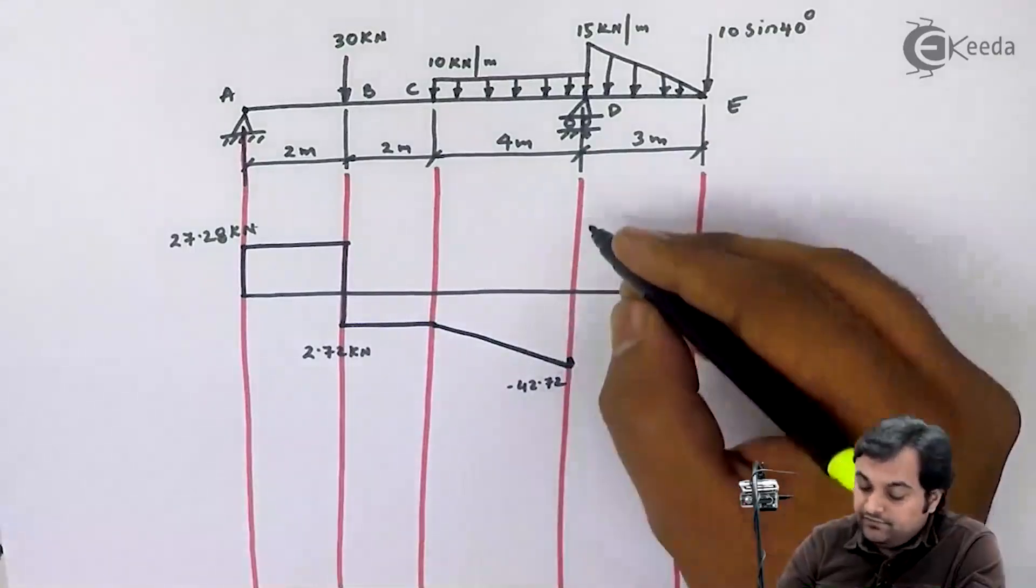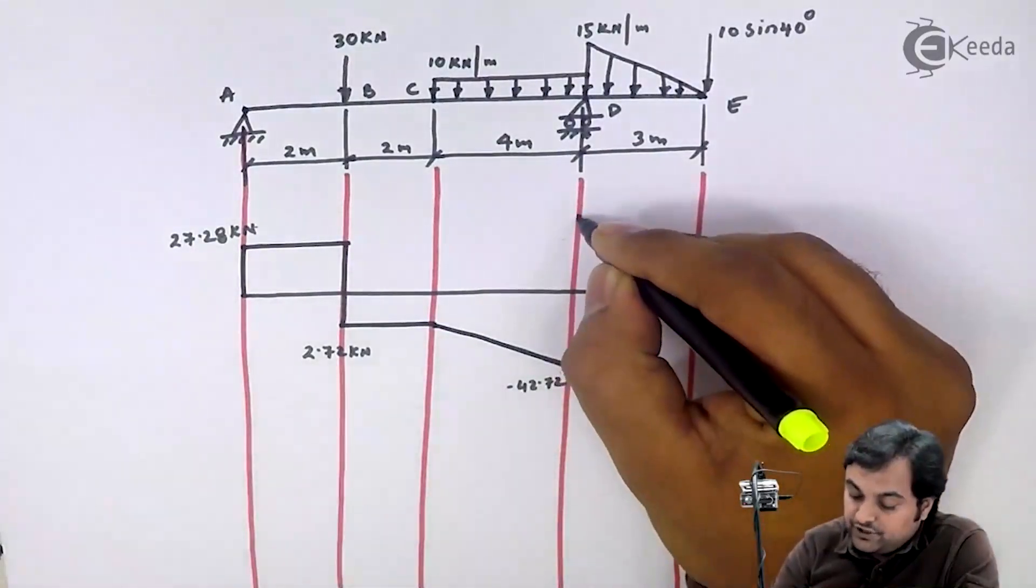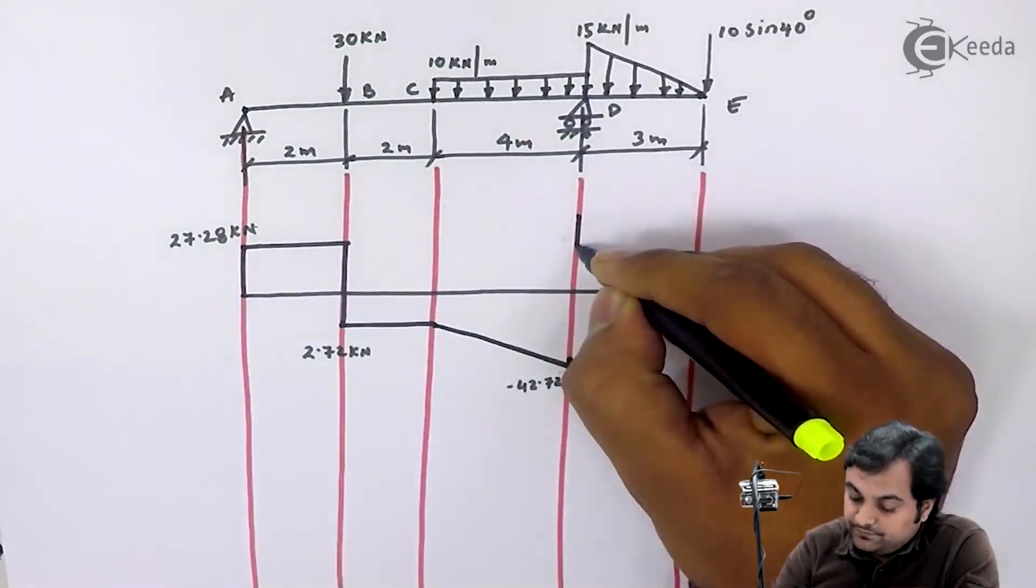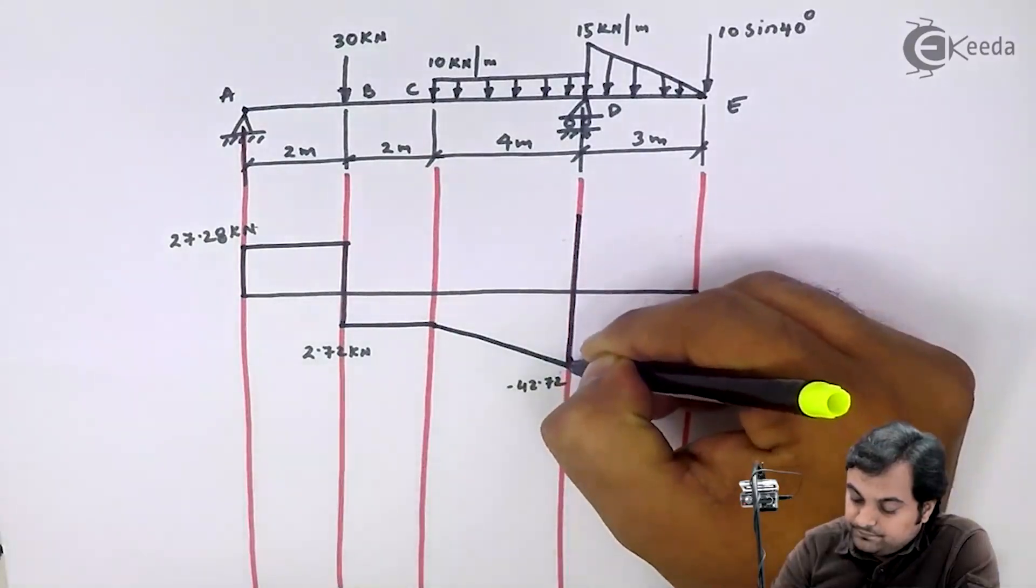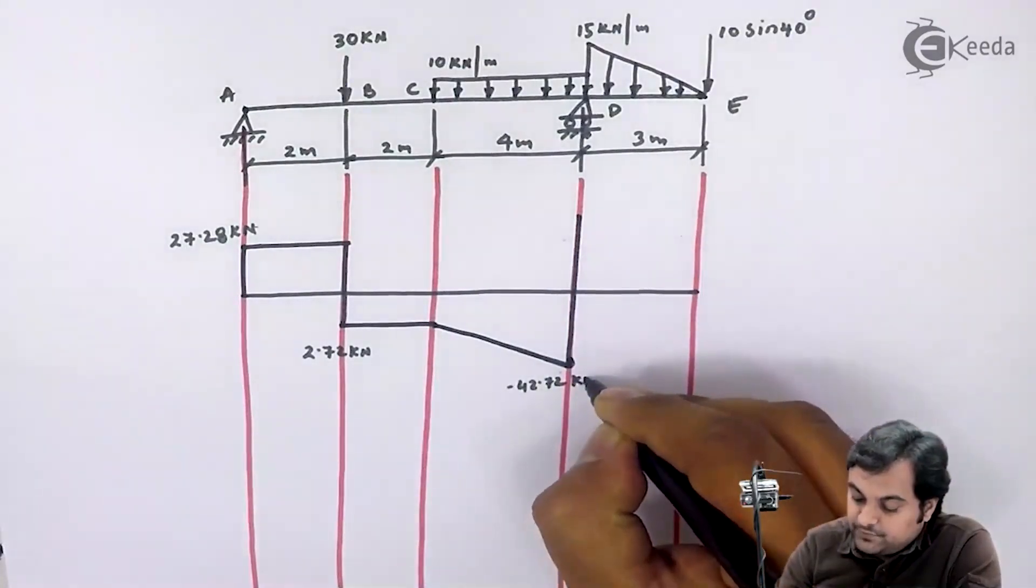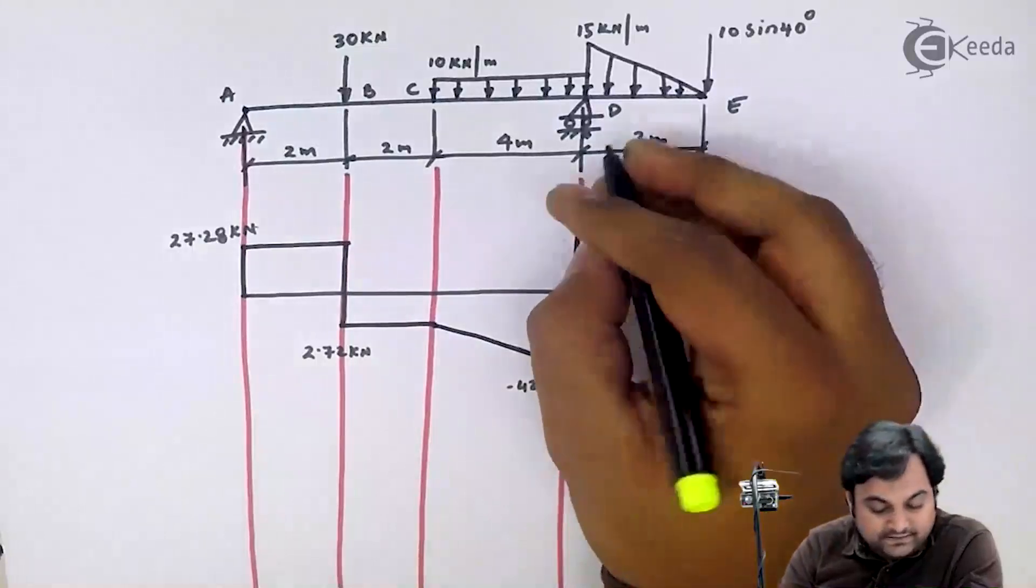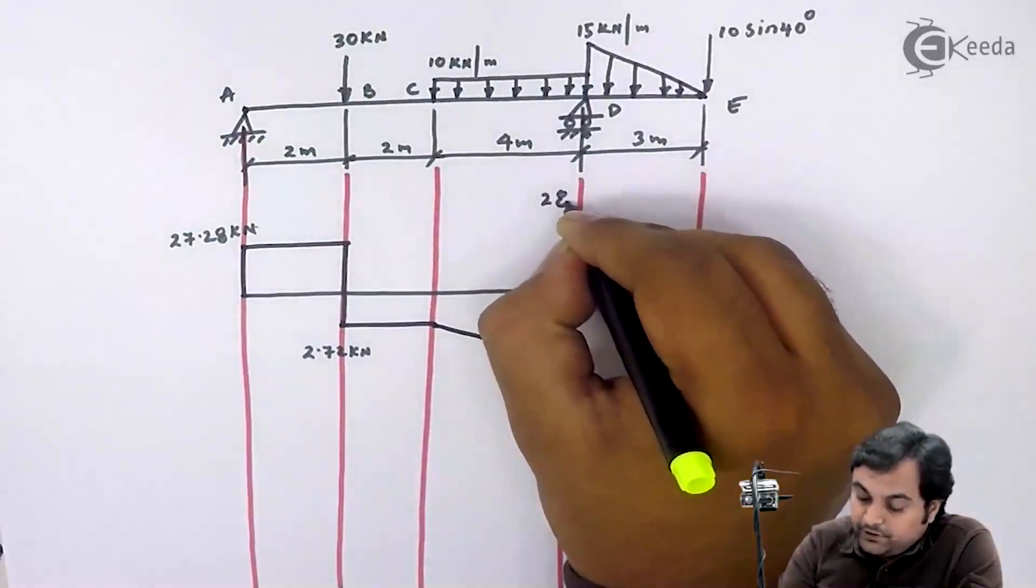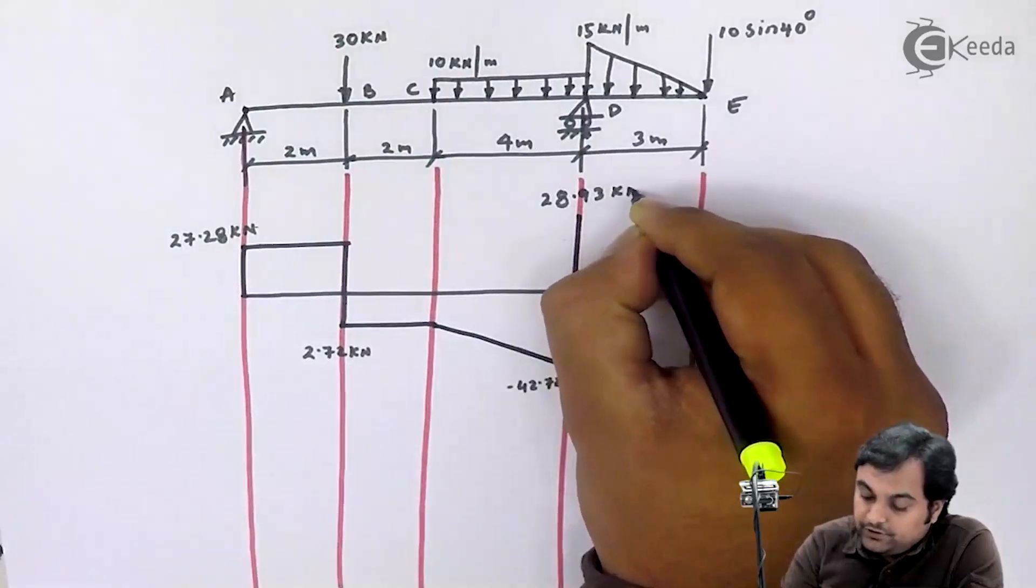Now at D we are having again a value of shear force which is positive. So one value is negative, other is positive 28.93 kilonewton.